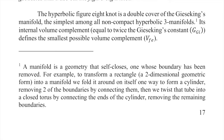A manifold is a geometry that itself closes — one whose boundary has been removed. For example, to transform a rectangle into a manifold, we fold it around on itself to form a cylinder, removing two boundaries by connecting them. Then we twist that tube into a closed torus by connecting the ends of the cylinder, removing the remaining boundaries. When all the boundaries are gone, it's a two-dimensional surface that's closed — you could be an ant walking in any direction and you would never fall off the edge.